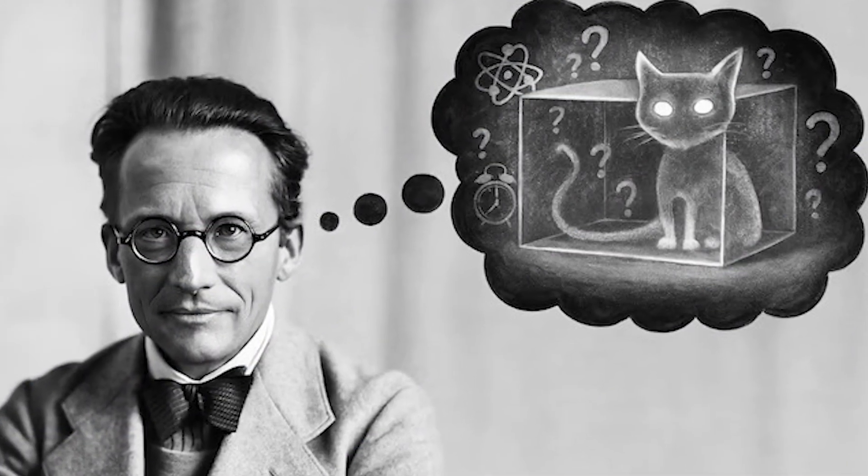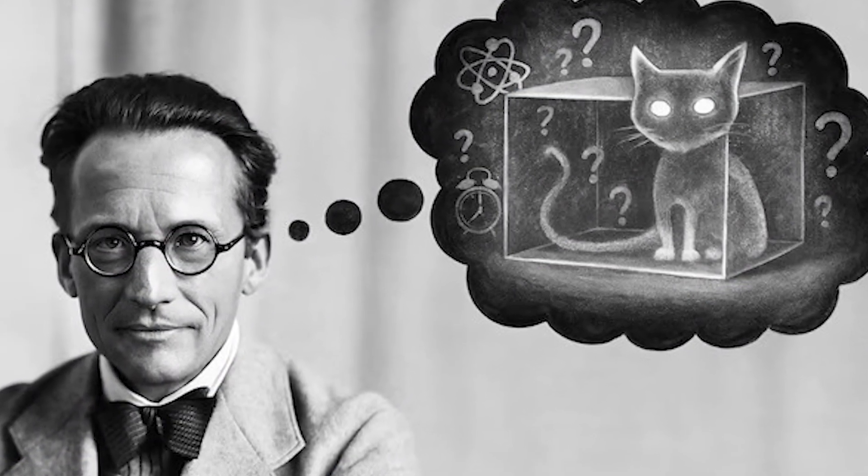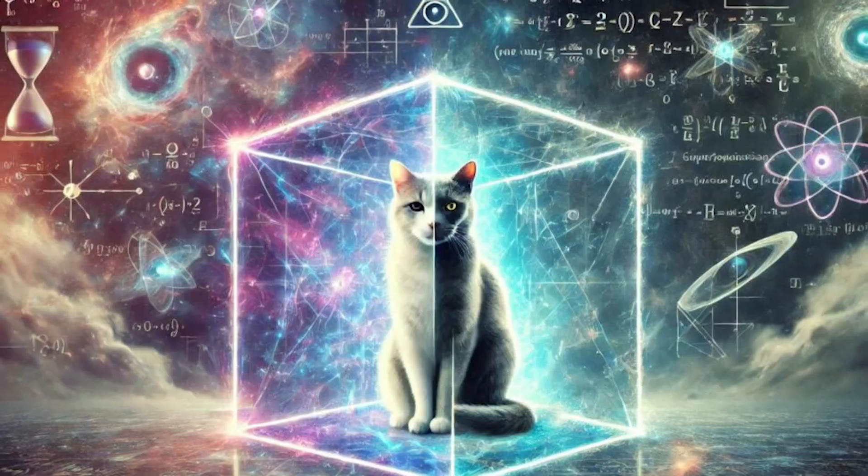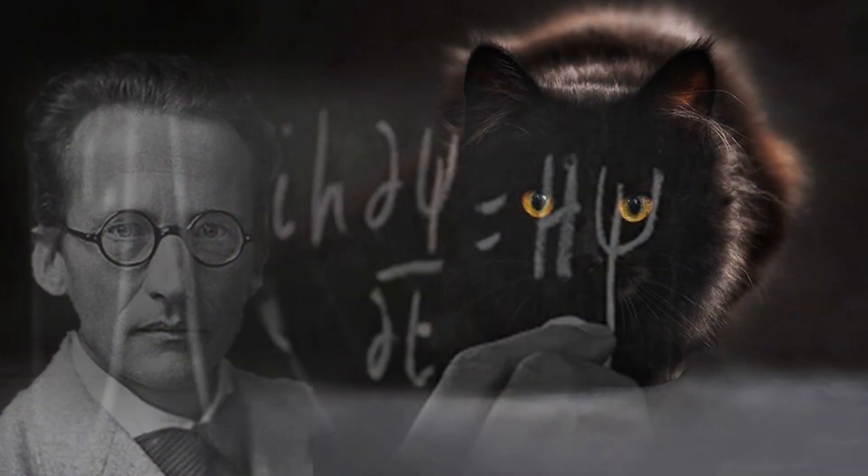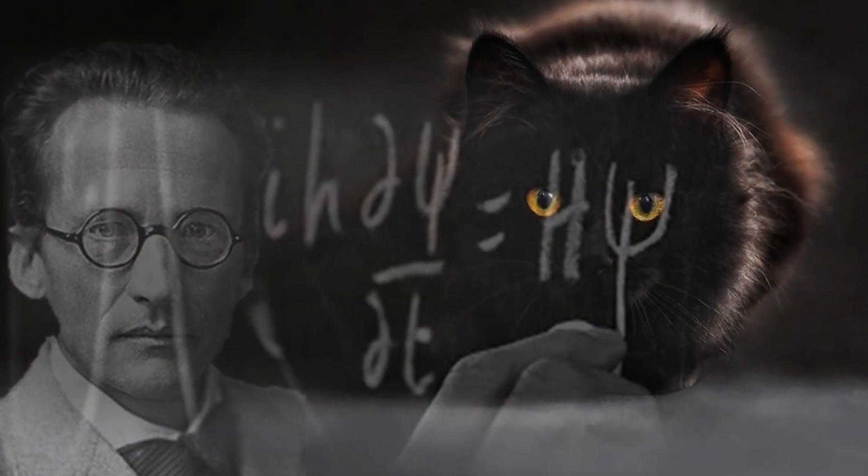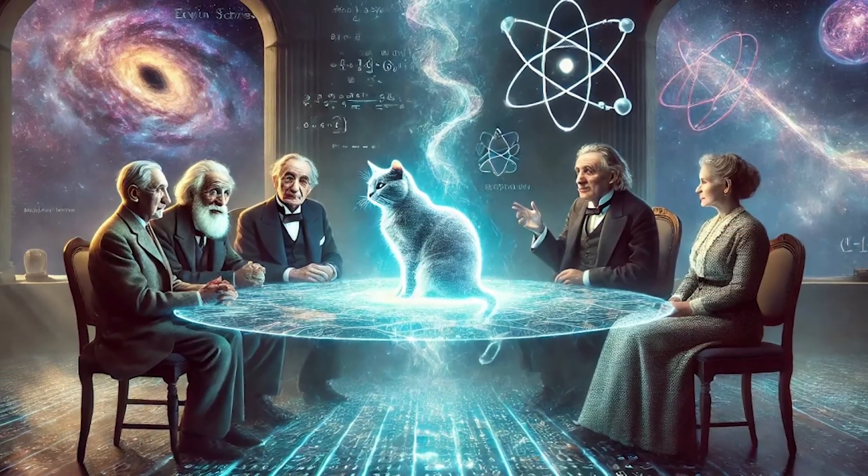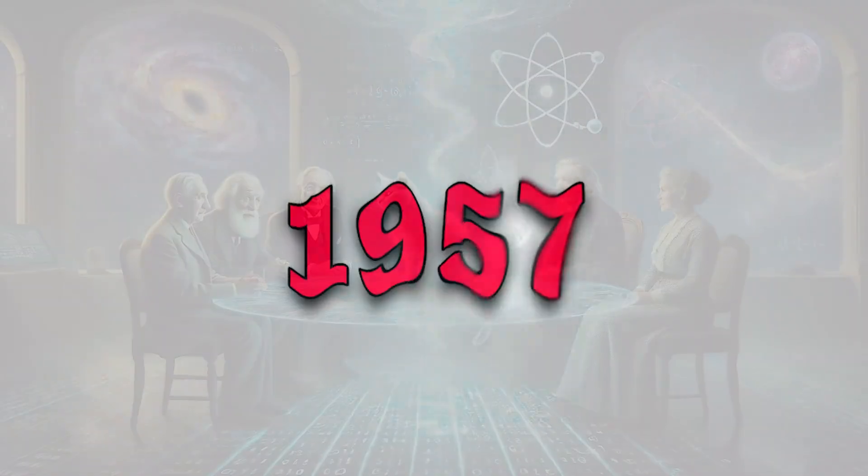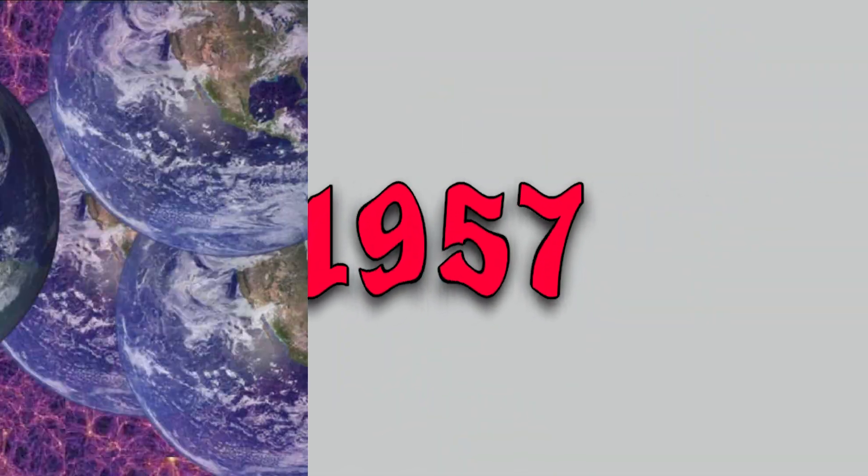Schrödinger illustrated this weirdness with his famous cat-in-a-box thought experiment. Until someone opens the box, the cat is both alive and dead, a bizarre mix of possibilities. For decades, scientists wrestled with this paradox. But in 1957, a young physicist named Hugh Everett proposed a bold solution.